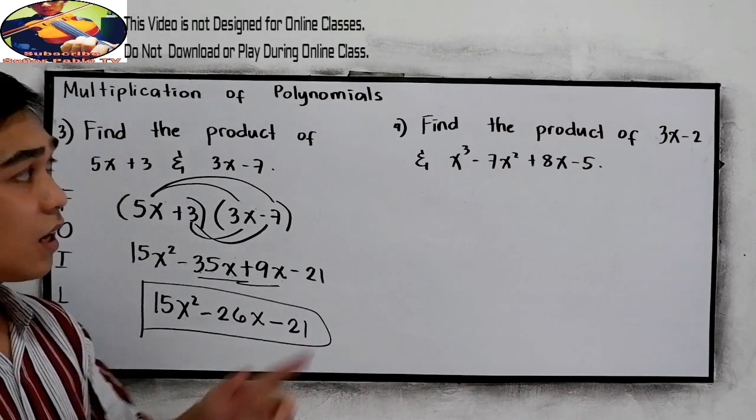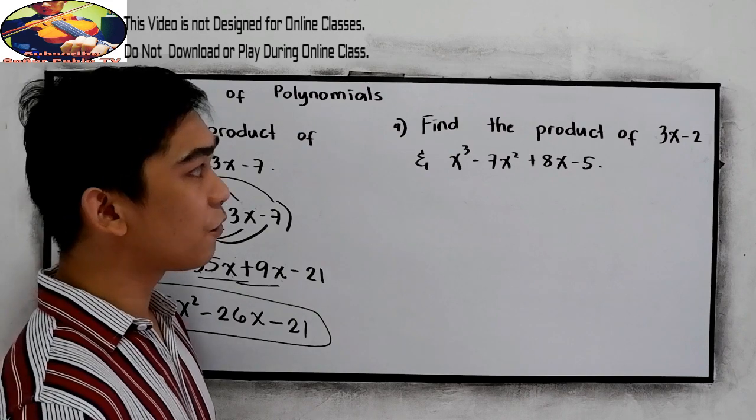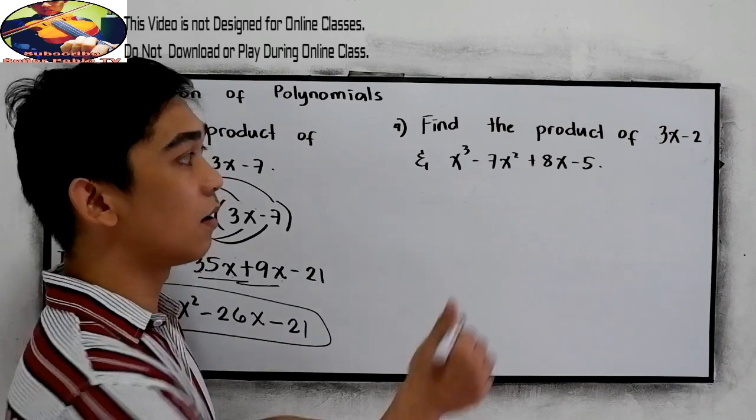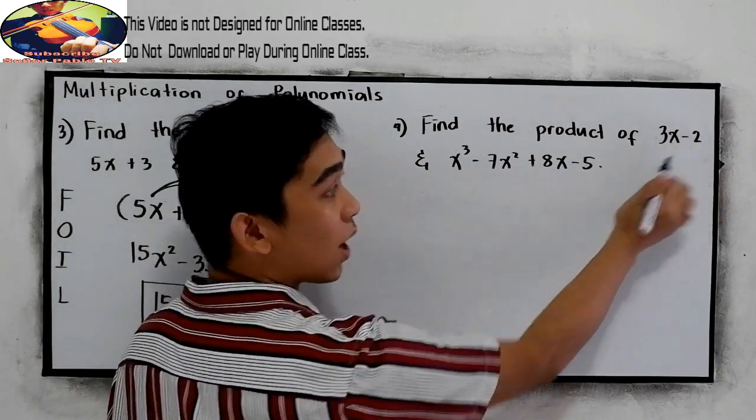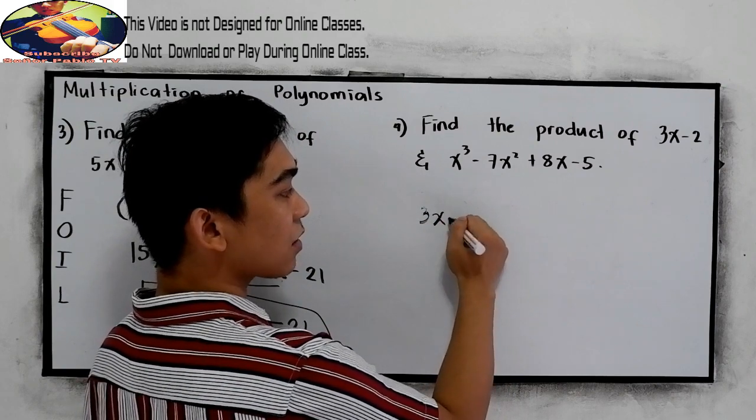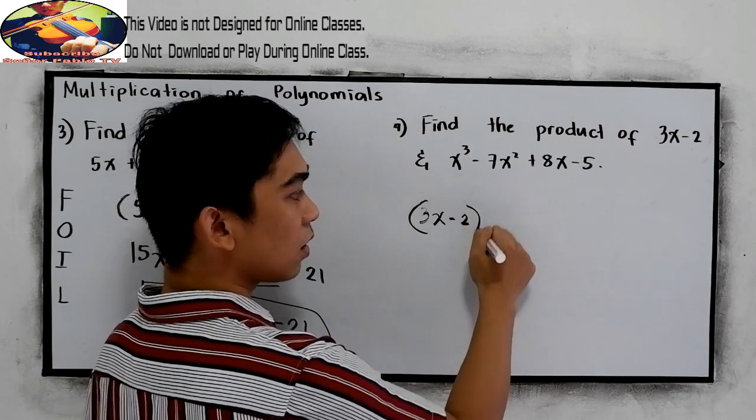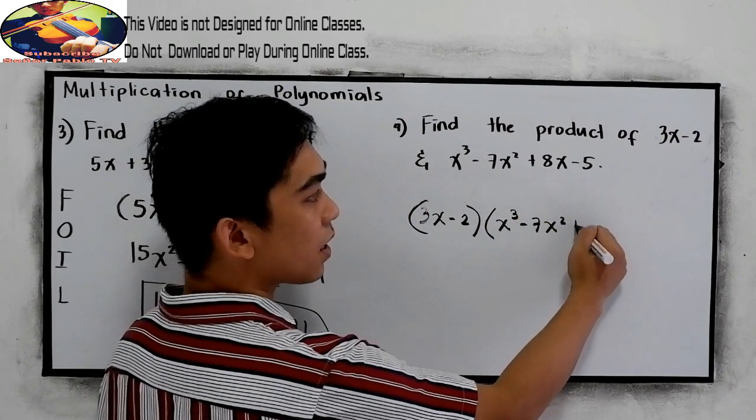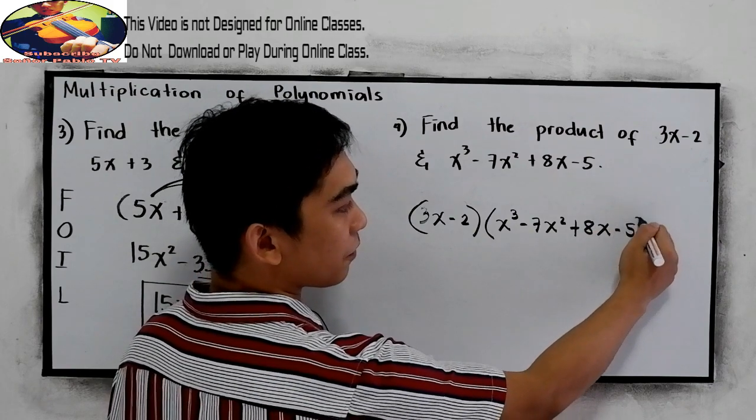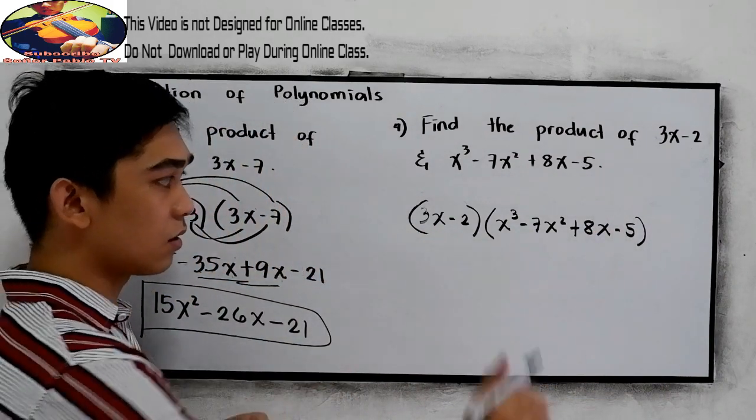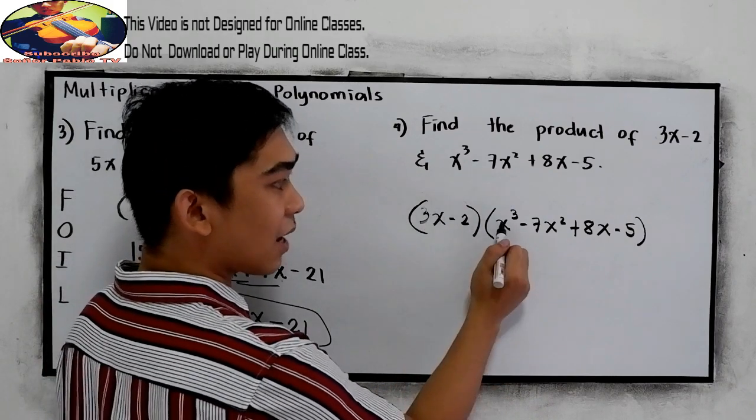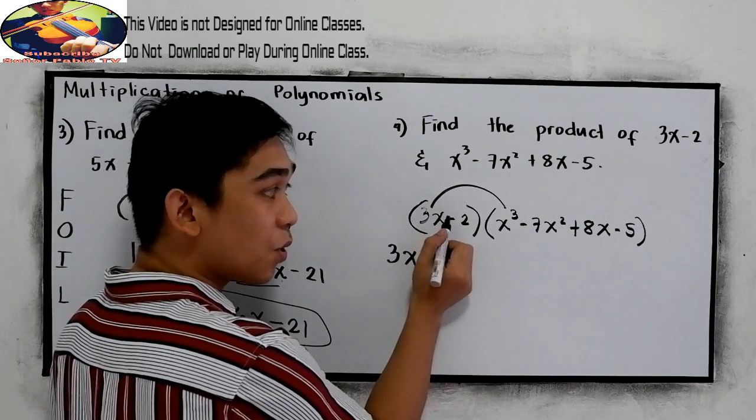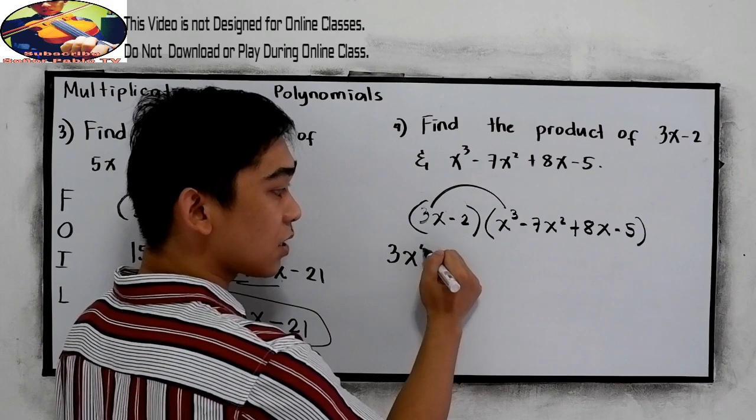And for our fourth example, find the product of 3x minus 2 and x cubed minus 7x squared plus 8x minus 5. So copy 3x minus 2, multiply it to x cubed minus 7x squared plus 8x minus 5. So we need to distribute. So 3x times x cubed, that is 3x. Add the exponent, 1 plus 3, that is 4.